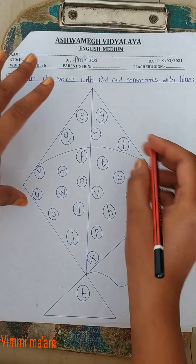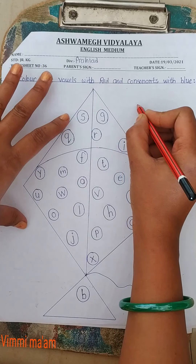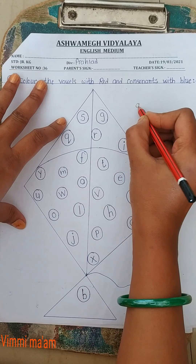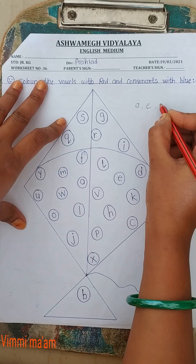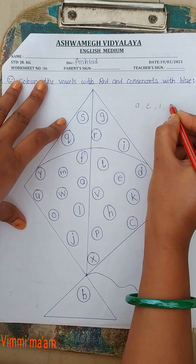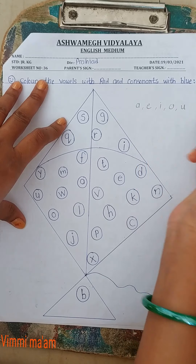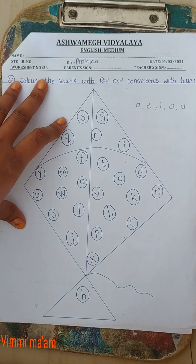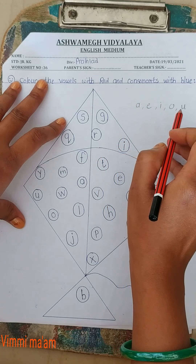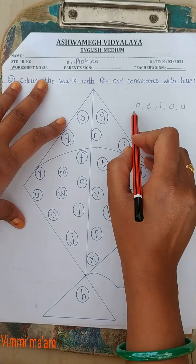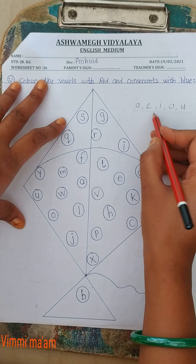One time we will remember the vowels. Which are vowels? A, E, I, O, U. Okay, A, E, I, O, U. This is what we call vowels.